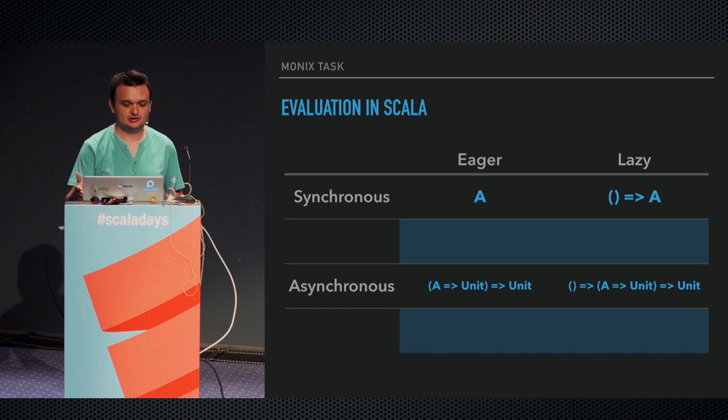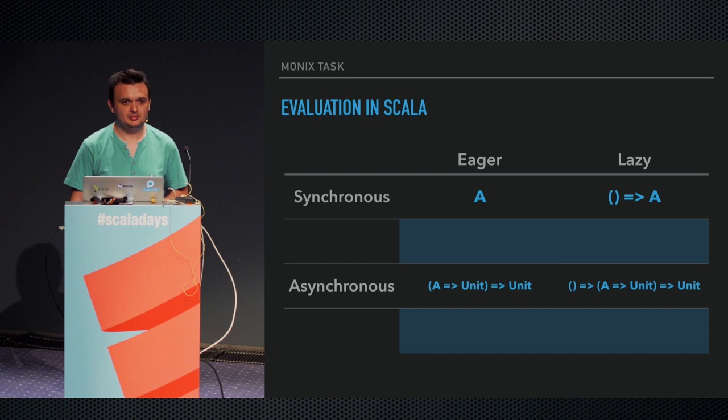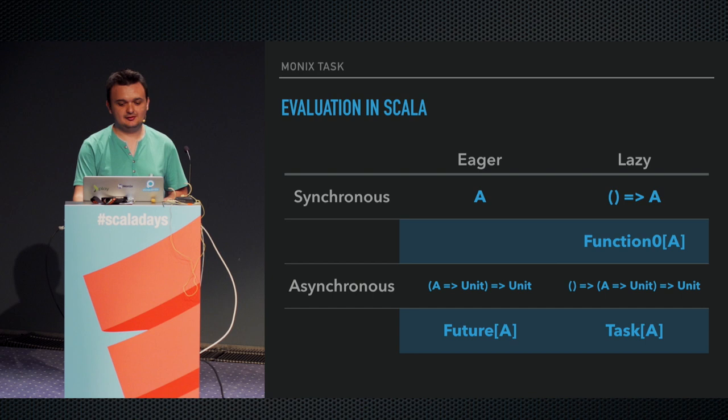Future is an eagerly evaluated value. When you receive a future, there's a pretty big probability that the process going to complete it has already started — that's what eager means in this context. It doesn't necessarily mean the future is already complete; just that the process has already started. To turn that into something lazy, you turn it into a function. Task is basically a function that returns a future — it's about delaying the future. I actually wanted to call this talk 'Delaying the Future'.